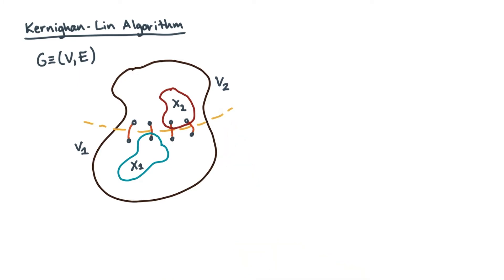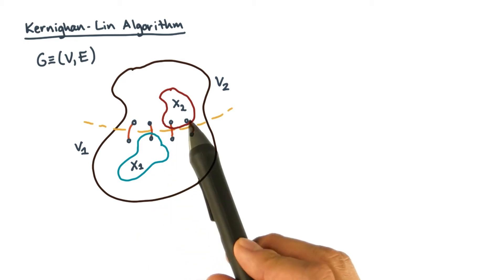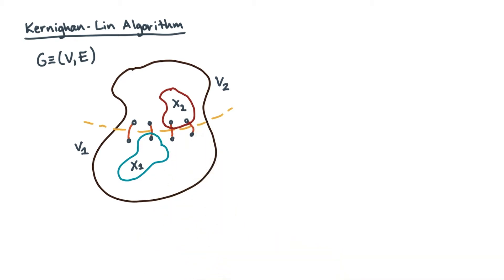You'll try to improve this partition by swapping two subsets of the elements, x1 and x2. So how do you choose x1 and x2? Here's the KL procedure.